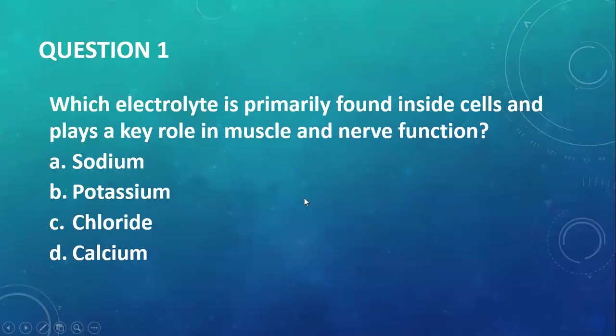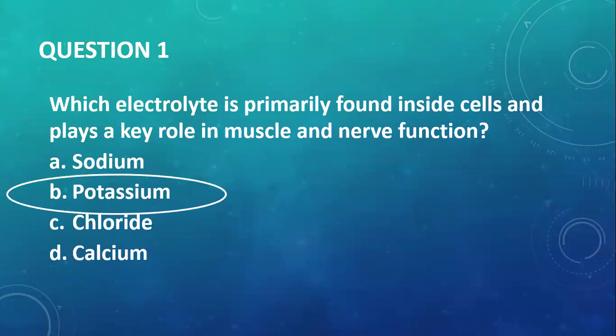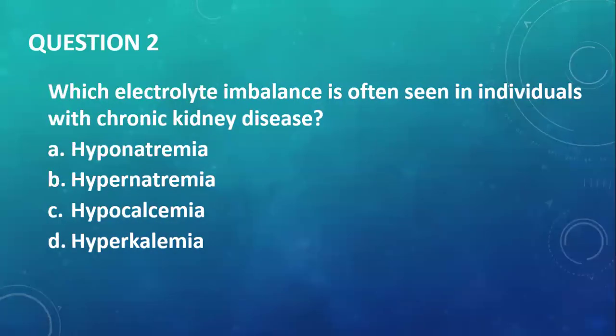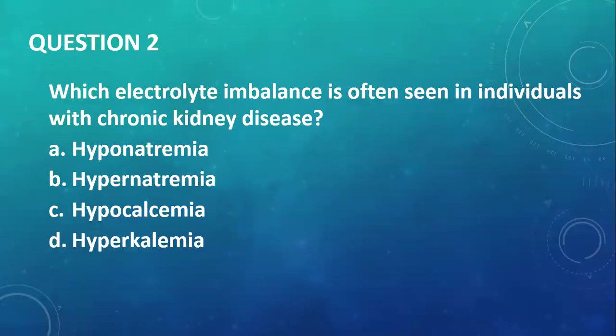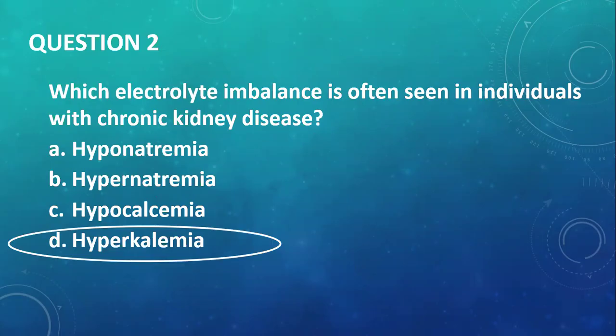Question number one: which electrolyte is primarily found in cells and plays a key role in muscle and nerve function? That's easy — it's potassium. Question number two: which electrolyte imbalance is seen in individuals with chronic kidney disease? That will be hyperkalemia, because the body will not be able to get rid of potassium because of that problem.